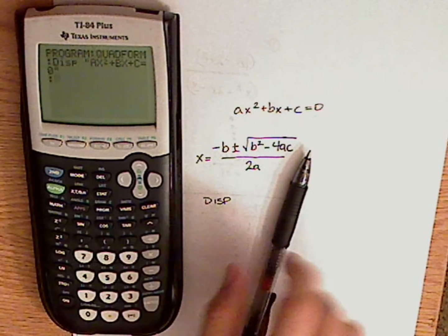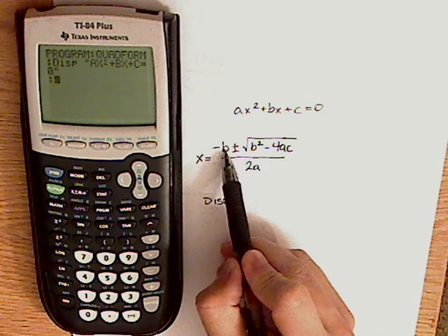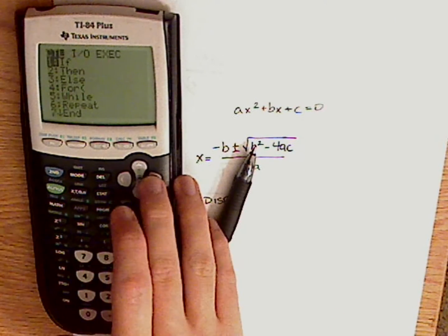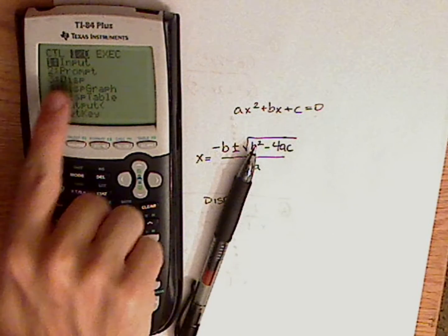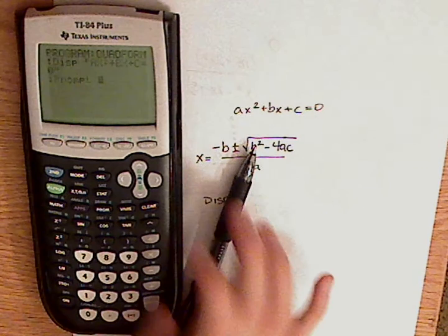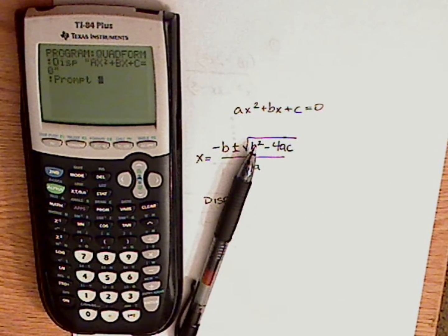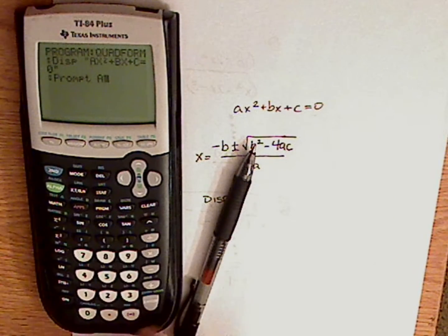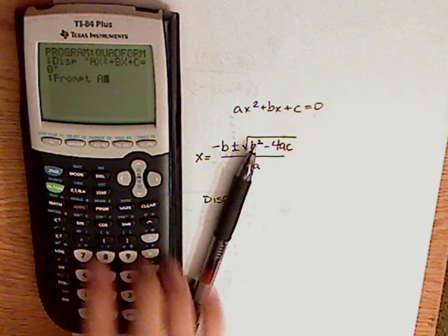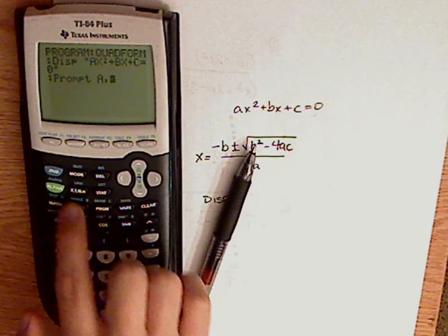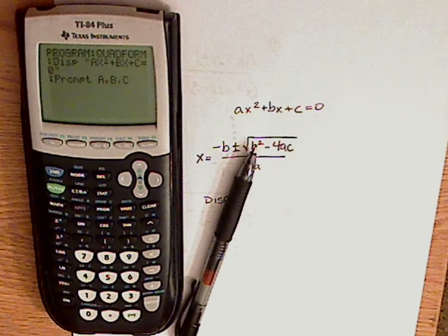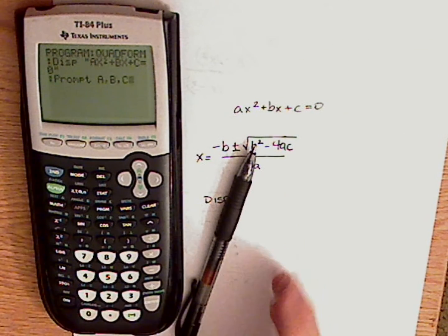Now you want to type in the variables that you're going to be using, which is A, B, and C. So you want to push program again, go to I/O, and select prompt. Now what prompt will do is it will prompt you and say, okay, A equals, B equals, C equals. So A equals. Now just push A, and then comma, B, comma, C. It's going to prompt A, B, and C.